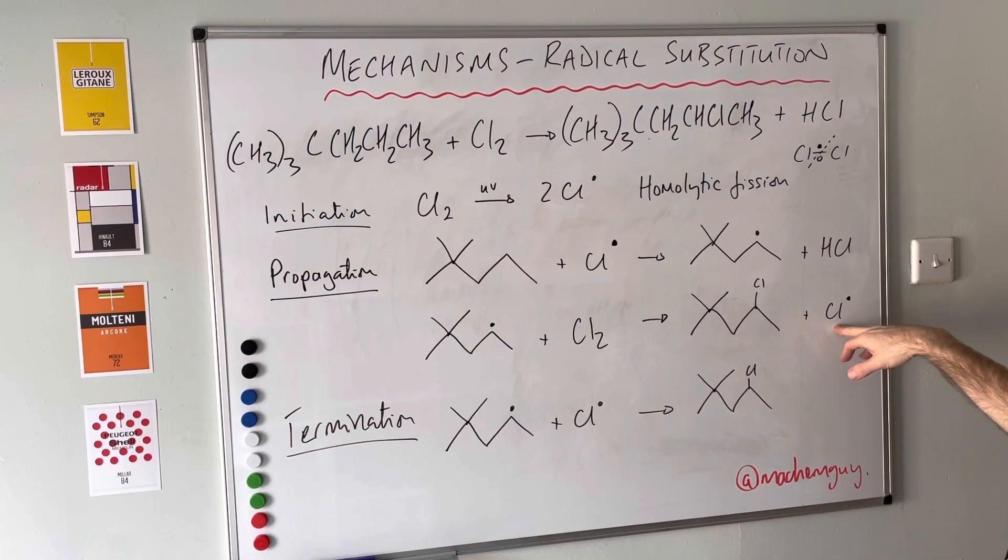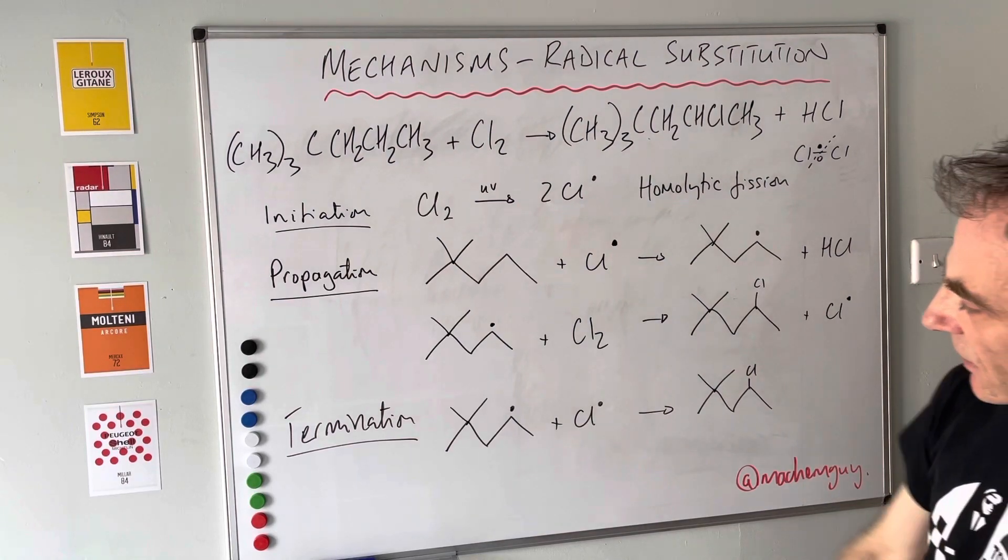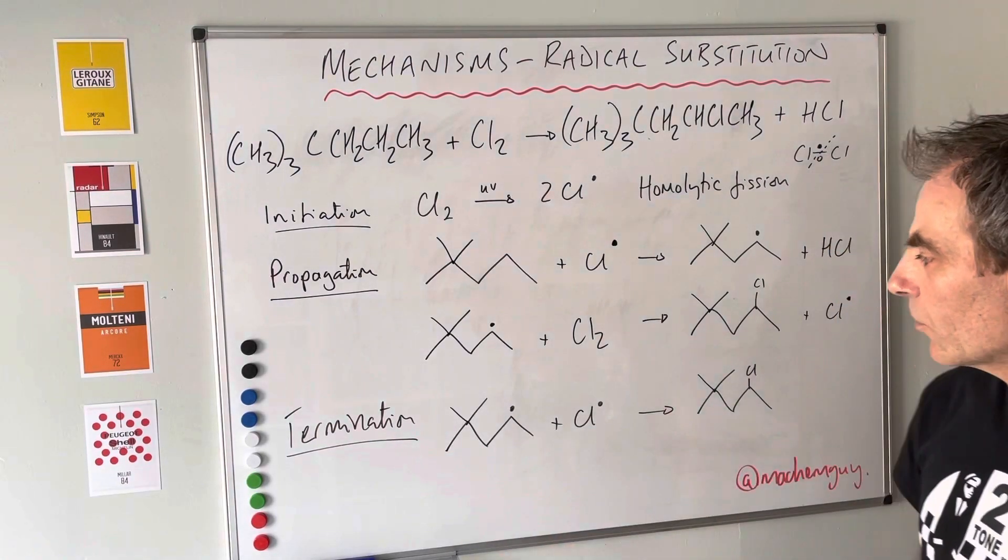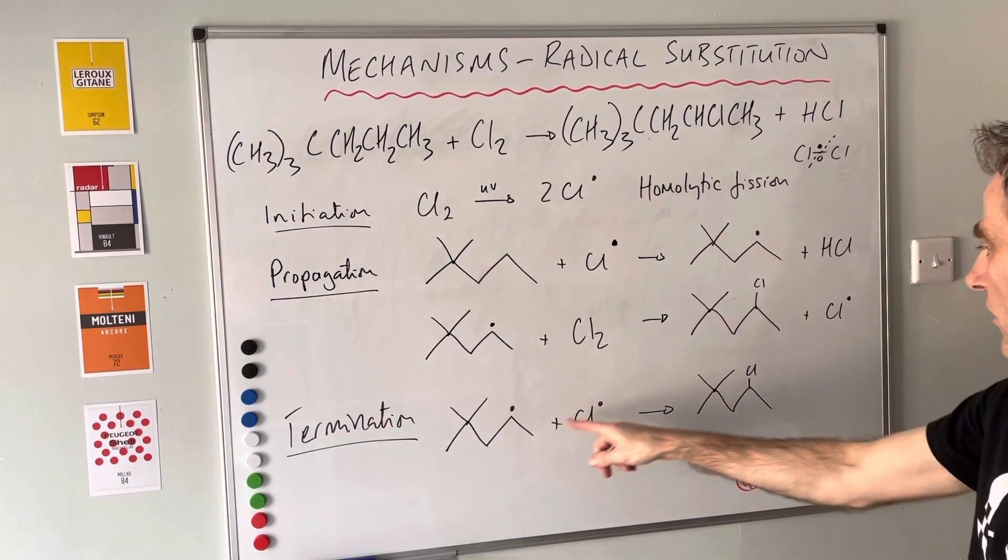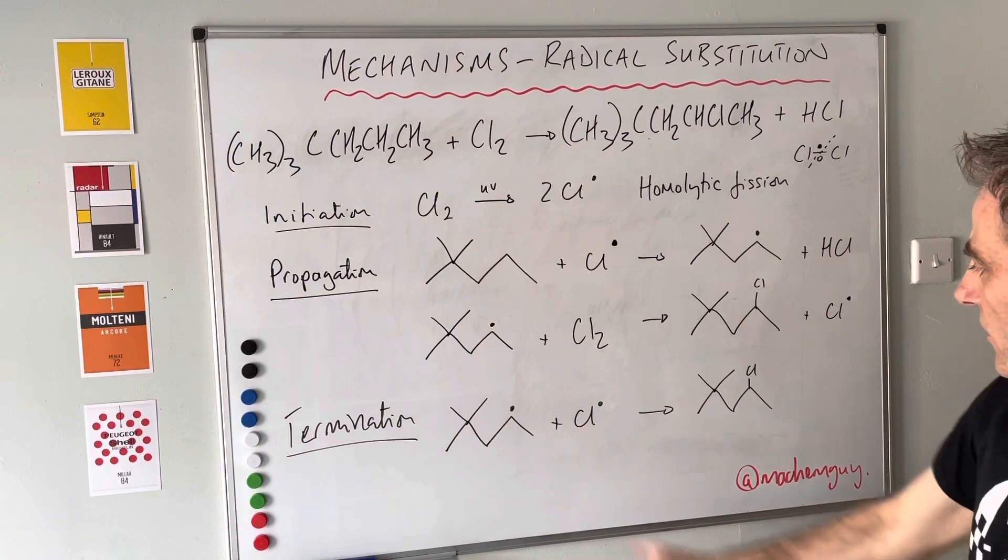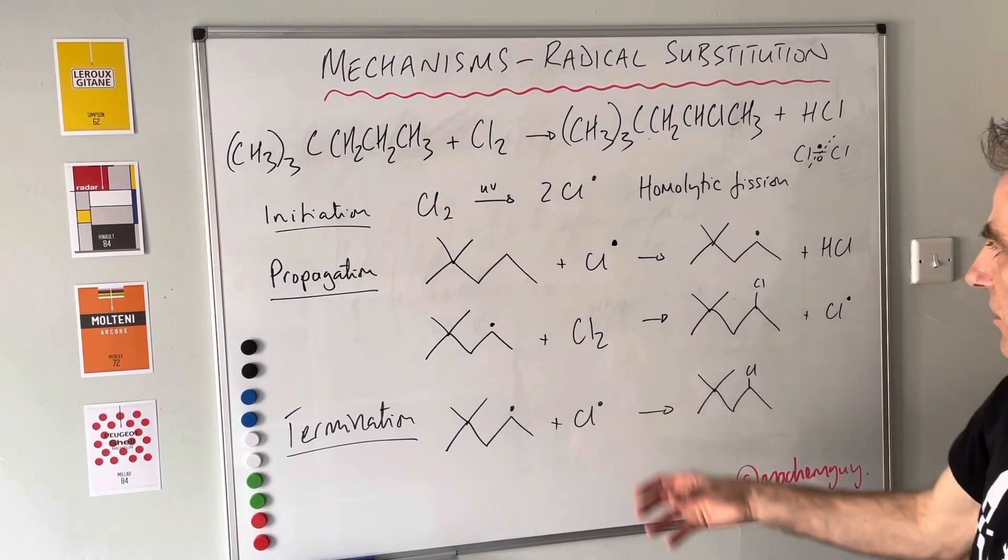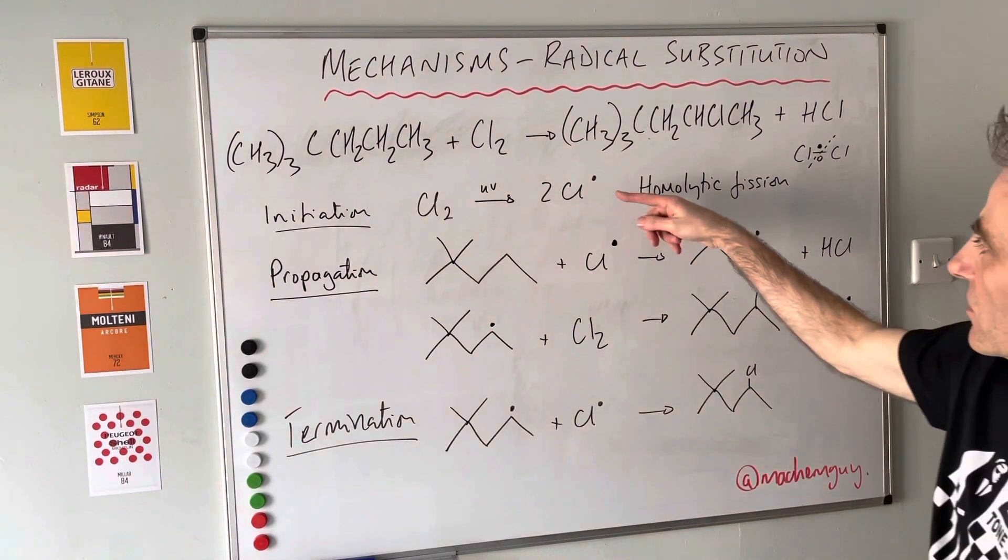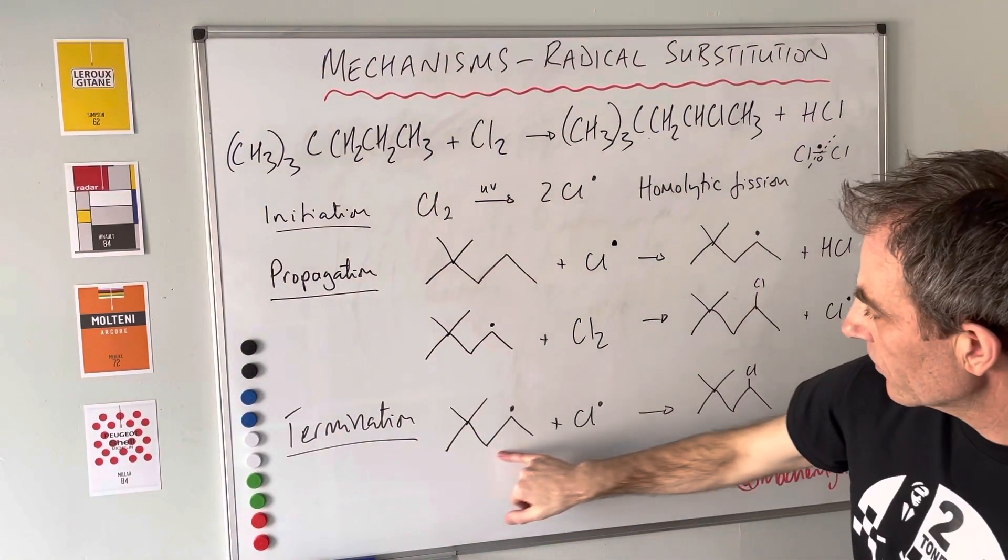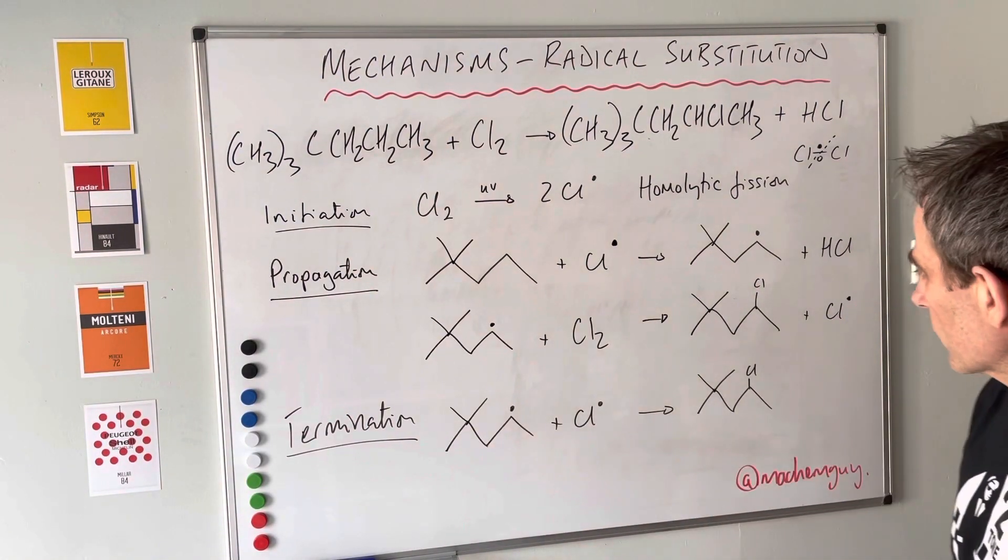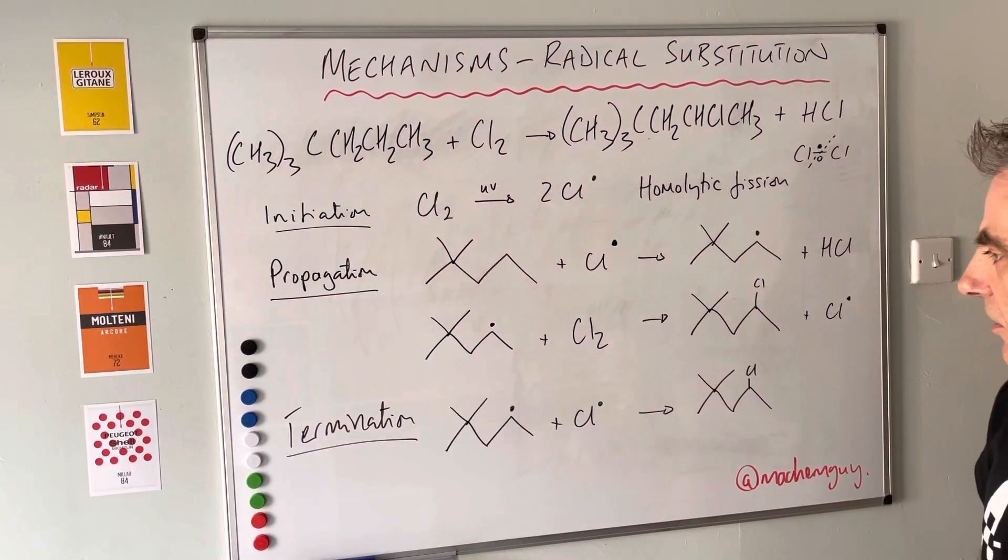For the termination step, remember it said just one of these. All you need to do is take any two radicals and join them together. I've gone for that one. You could have used two chlorine radicals to produce a chlorine molecule, which is the reverse of the initiation step, or you could have joined two of those together.